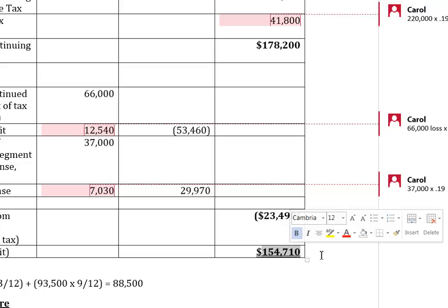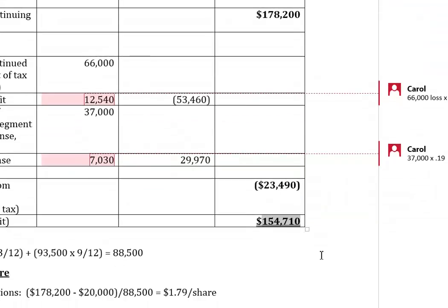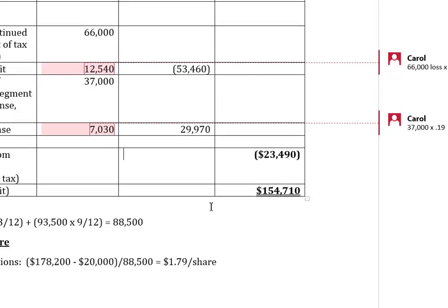When you have a discontinued operation, you have three EPS calculations. If you did not have a discontinued operation, income from continuing operations would equal net income and you'd need only one EPS calculation. Before calculating earnings per share, I need to determine the weighted average common shares — the denominator for the EPS calculation.